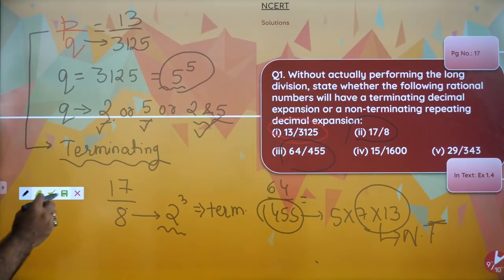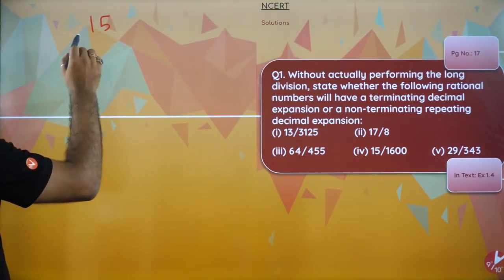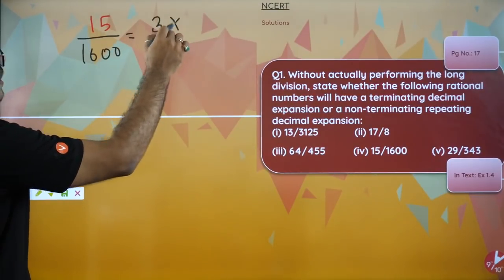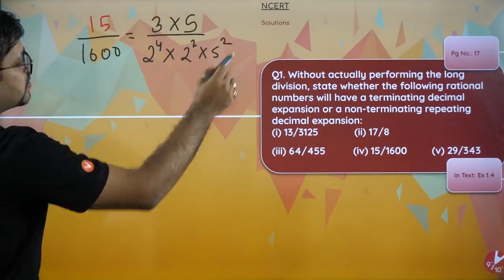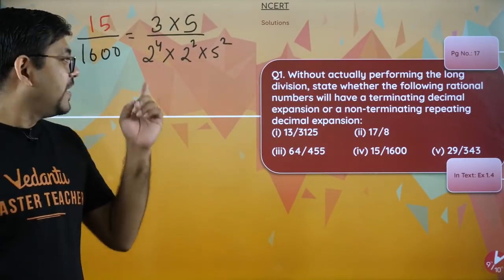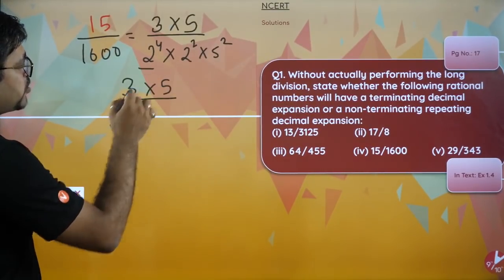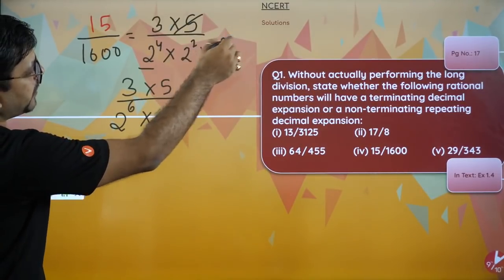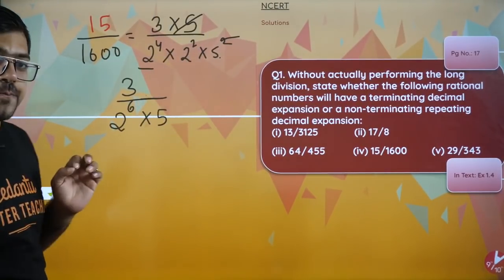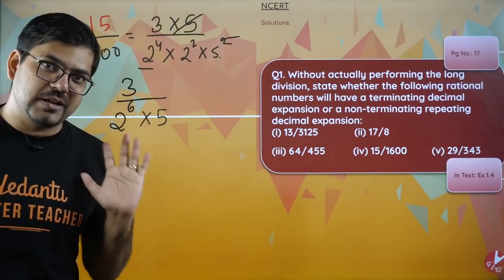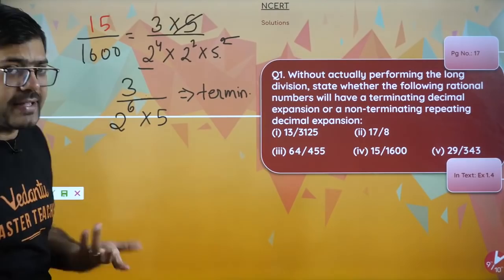Let's concentrate on the next one. The next one is 15 upon 1600. In this, 15 upon 1600 is 3 into 5, and 1600 you can write as 2 raised to power 4 into 100, which is 2 square into 5 square. Basically what you got is 3 into 5 divided by 2 raised to power 6 into 5 square. This 5 will get cancelled, so you can remove one 5 from here and in the denominator you will write only 5. Now in the denominator what do you have? You have only 2 and 5 - only friend numbers are there. So if only friend numbers are there, this means this is going to give you terminating decimal.